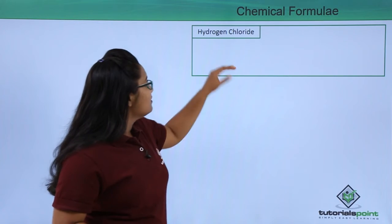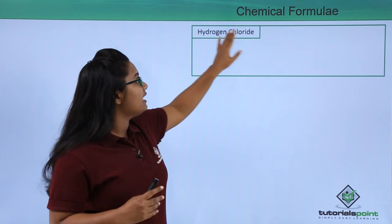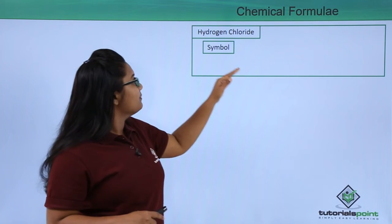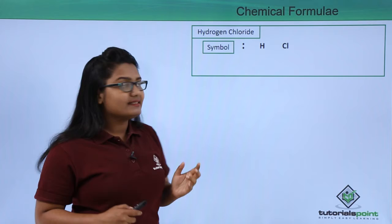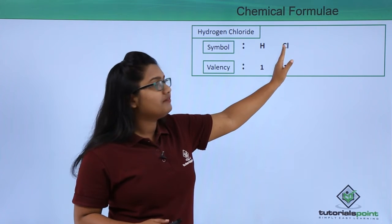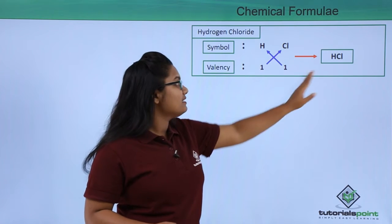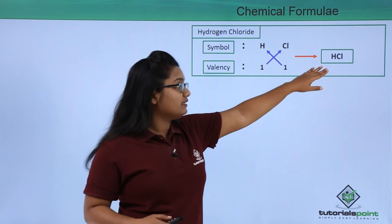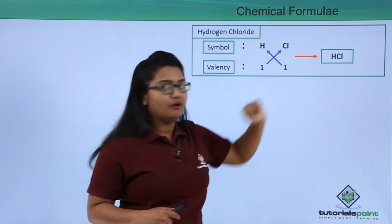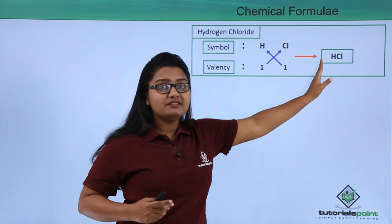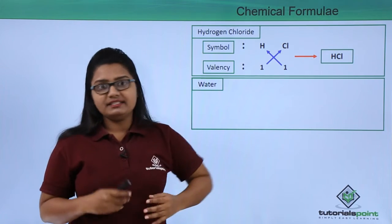For hydrogen chloride, we can see it must contain hydrogen and chlorine atoms. We write the symbols H and Cl, and their valencies: both hydrogen and chlorine have a valency of 1. Crossing over the valencies gives the formula HCl. Note that when there is only one atom of an element, we do not write the subscript 1 — we just write the symbol.